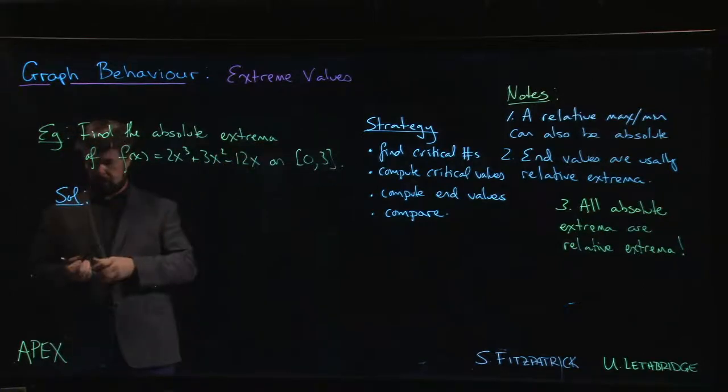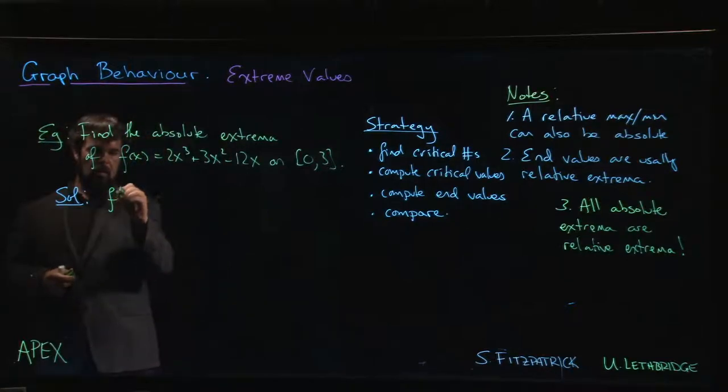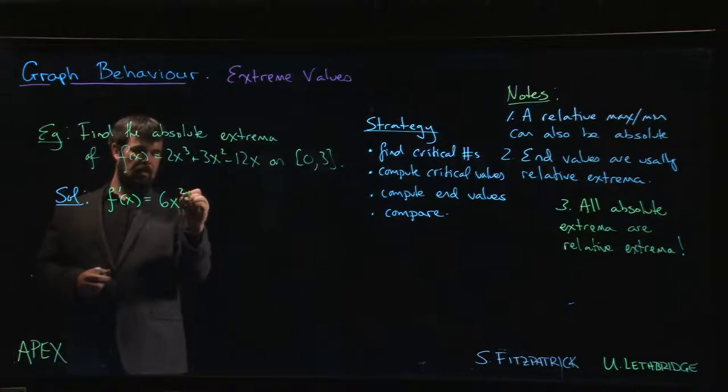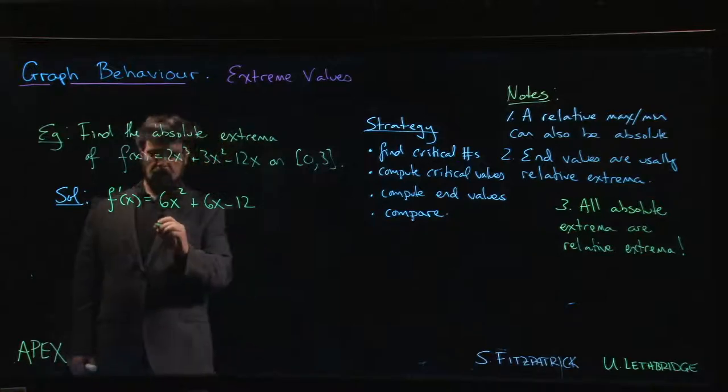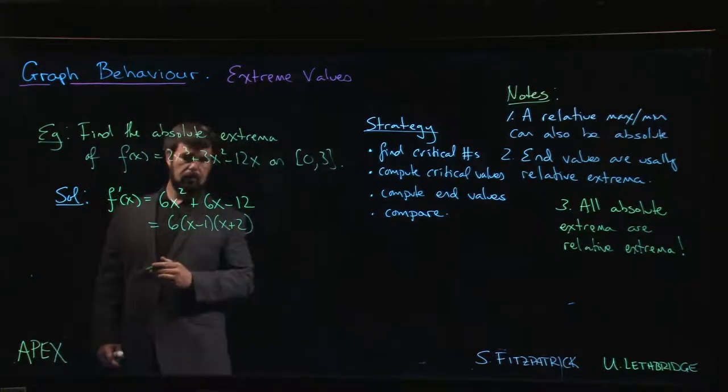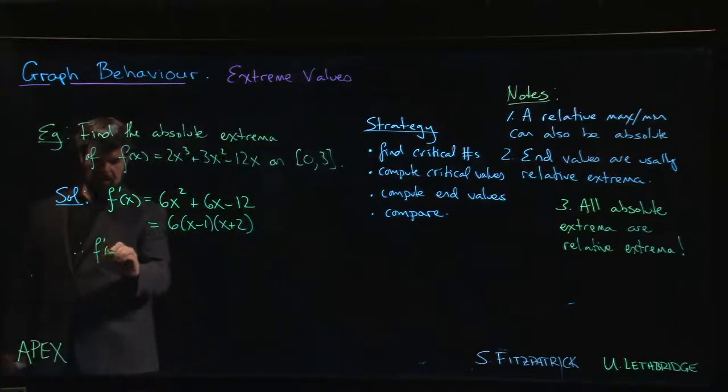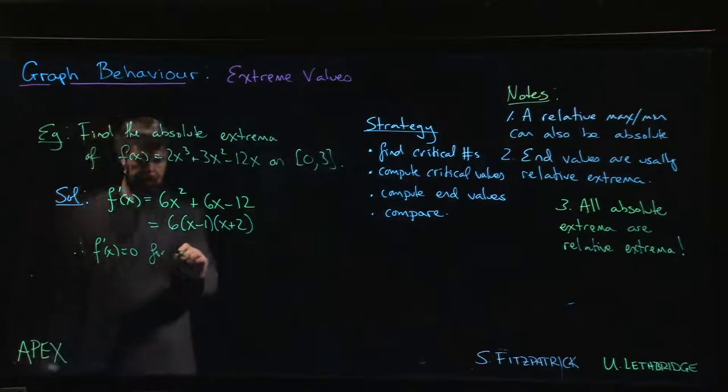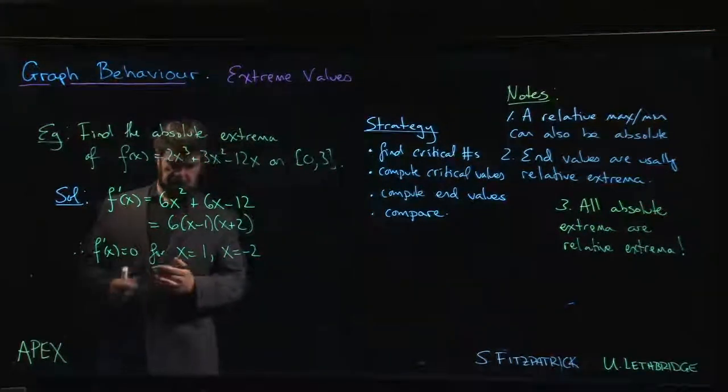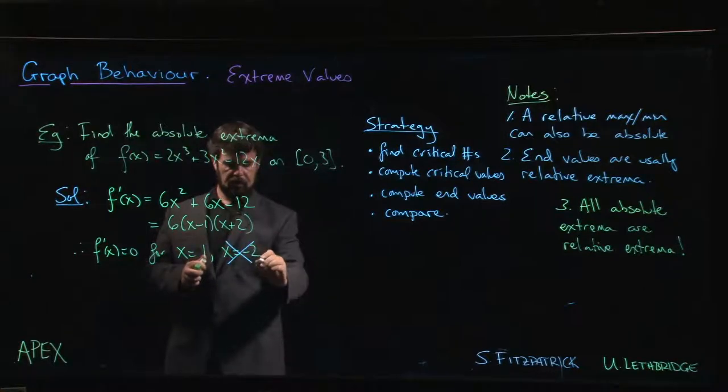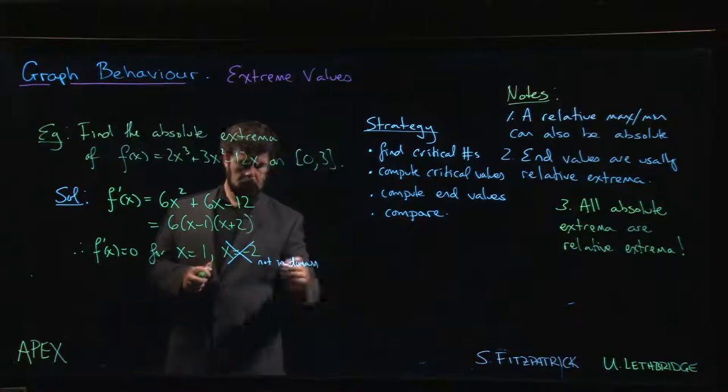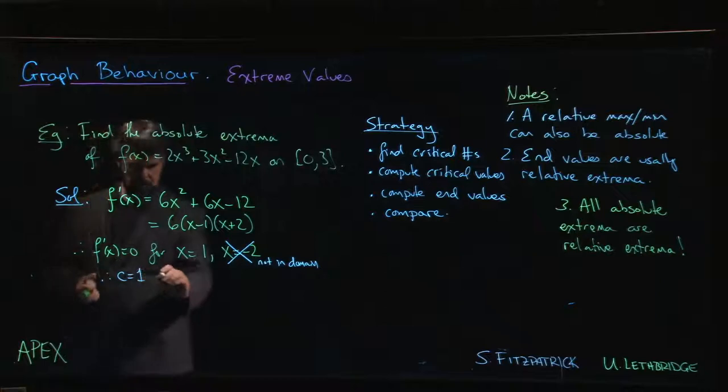What's the first step? Find the critical numbers. We know that critical numbers are those points where the derivative is either 0 or undefined. Our function's a polynomial, so we know it's differentiable everywhere. This is simply a matter of computing the derivative and finding the zeros. We have 6x² + 6x - 12. We can factor this: factor out a 6, and then we're left with (x - 1)(x + 2). That means f'(x) = 0 for x = 1 and x = -2. Now x = -2, we throw it out because it's not in our interval. This is not in the domain. That means c = 1 is the only critical number.